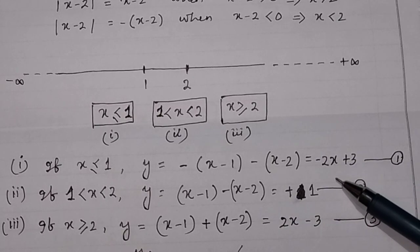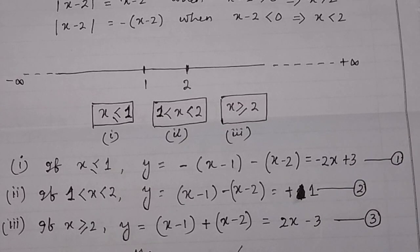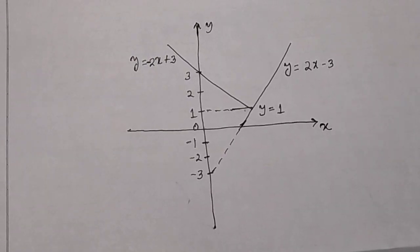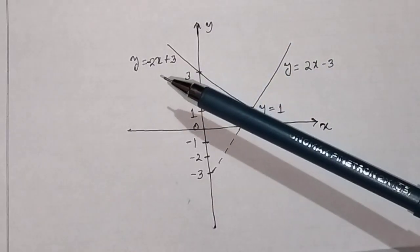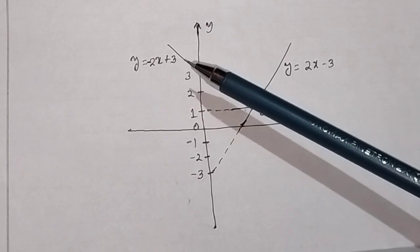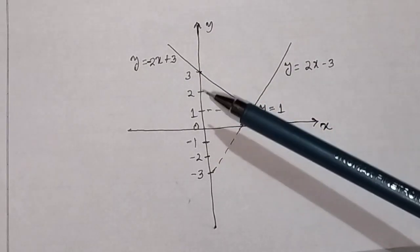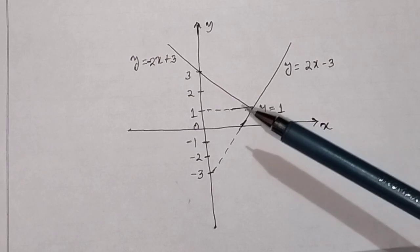So you have three equations, and since the equations are in the form of straight lines, you will plot the graph of three straight lines. For the equation y = -2x + 3, it is in the form y = mx + c, where the slope is minus 2 (negative) and the y-intercept is 3. This will be the nature of the straight line.